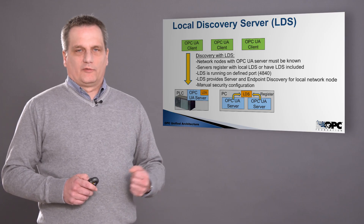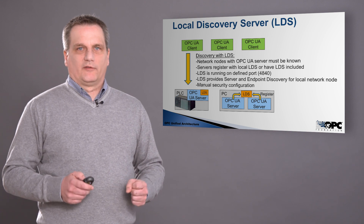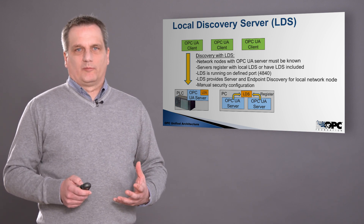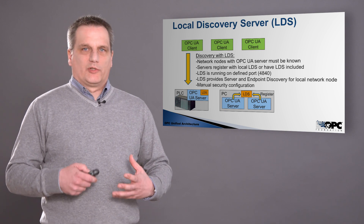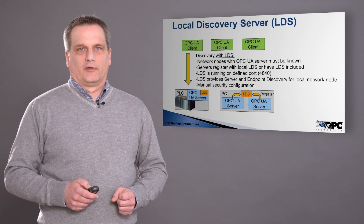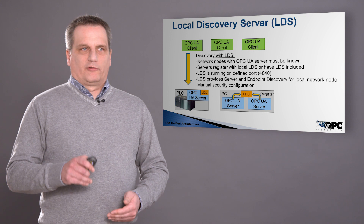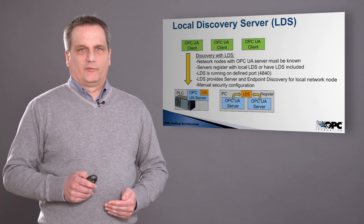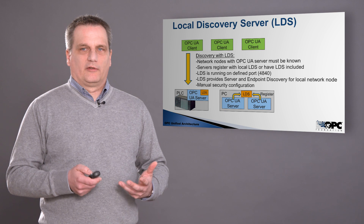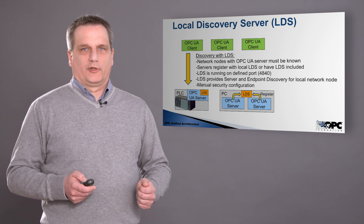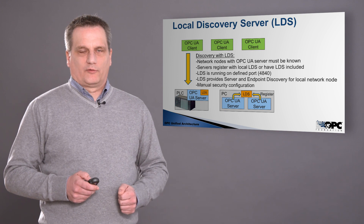If there's only one — like for example in a PLC you typically have only one OPC server running — then this server will present itself. But on a PC-based system where you have multiple software installed, which can all have their own OPC server, there will be a local discovery registration where all the servers register themselves, and then the client can always access port 4840 and either finds only the one server on that machine or finds a list of servers on that box.